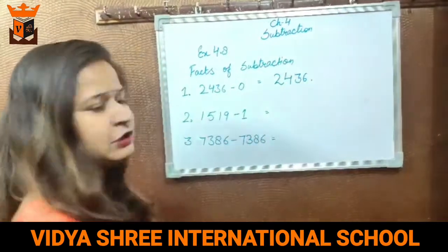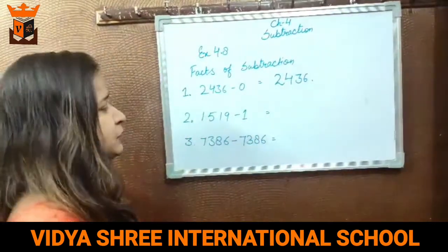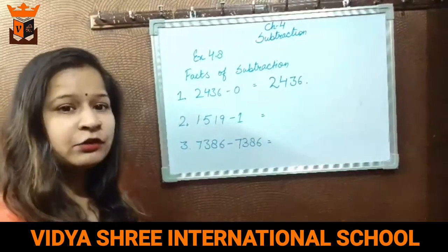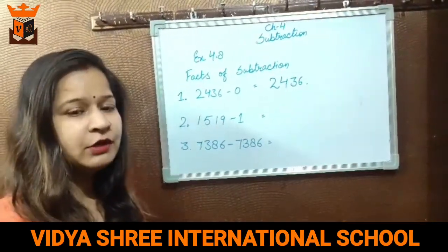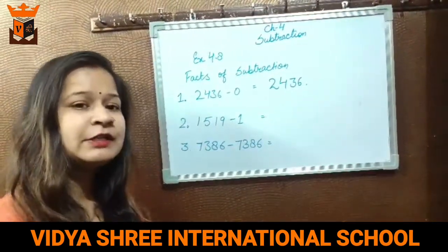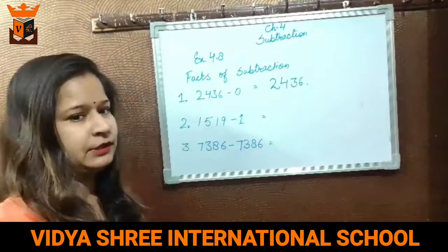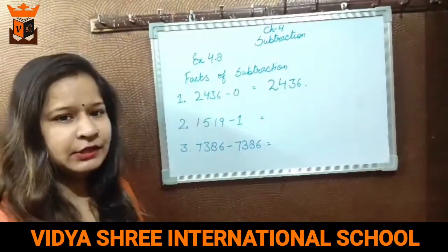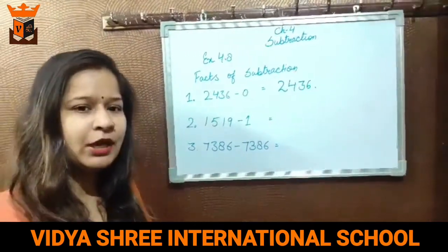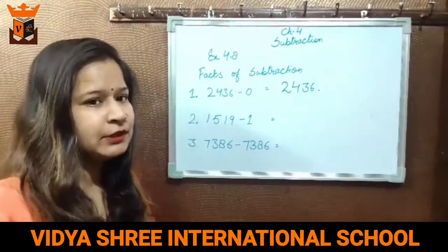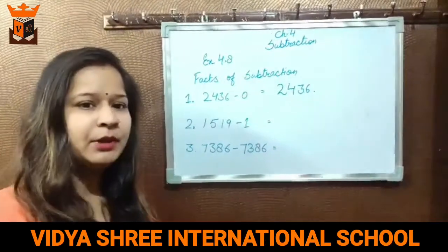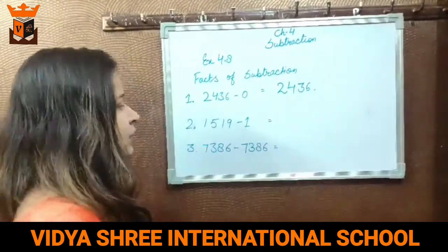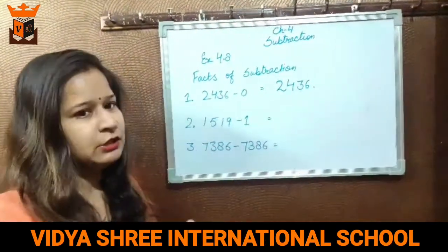It is the first fact of subtraction. Second is: when you subtract 1 from a given number, you get its predecessor. Jab hum kisi number mein se 1 less karte hain, to aapko kya milta hai? Predecessor. Humne apne chapter number 1 mein bhi yeh padha tha. Hume predecessor milta hai.